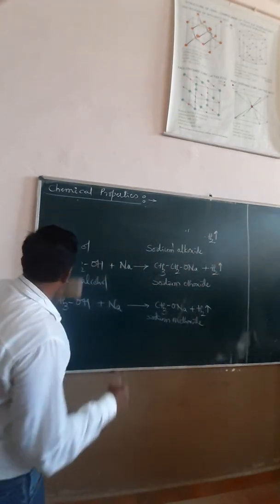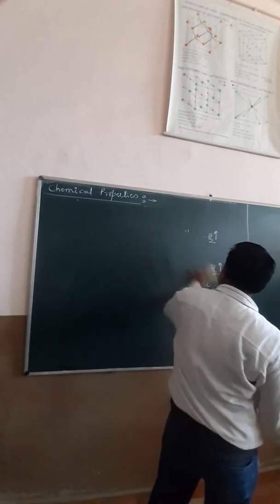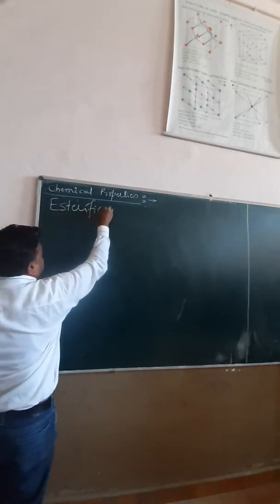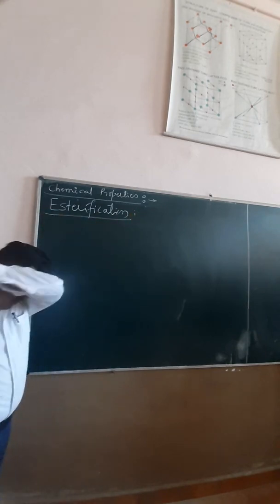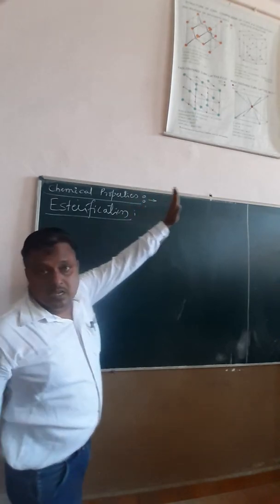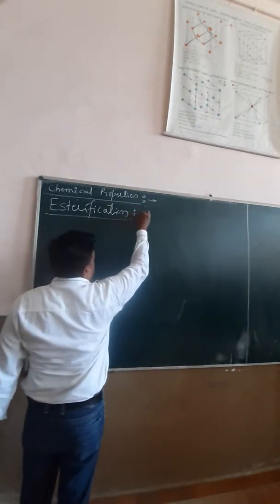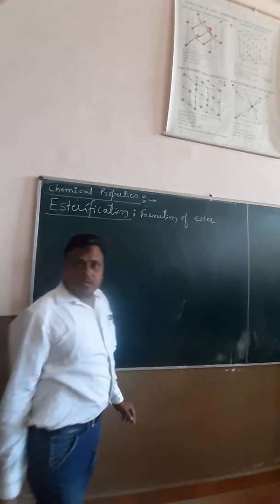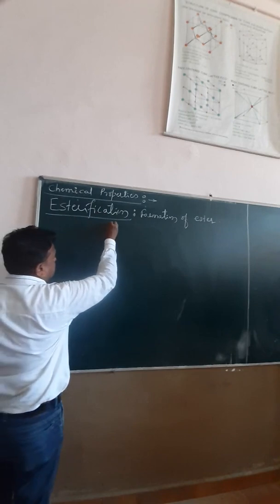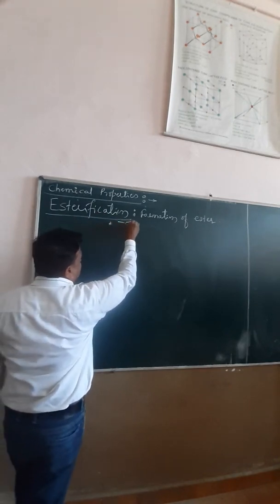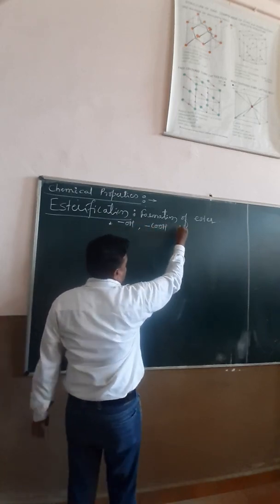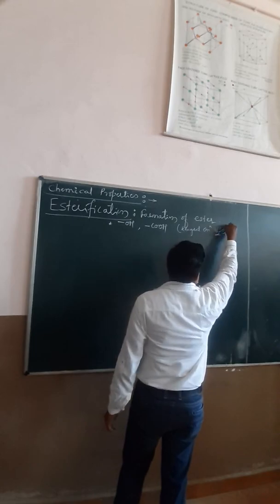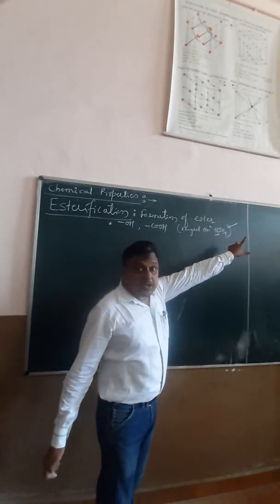Let us move on to the second reaction of chemical properties. This reaction is named esterification — a very important reaction. Keep in mind, we study this reaction in two topics: alcohol and carboxylic acid. Esterification is nothing but the formation of an ester. Here the reagents are: one is an alcohol, another is a carboxylic acid, and the reagent is concentrated sulphuric acid. The major role of concentrated sulphuric acid is as a dehydrating agent.